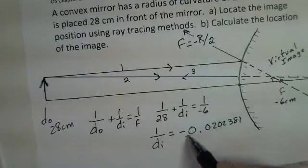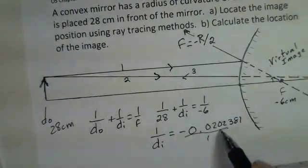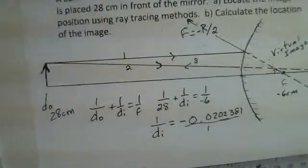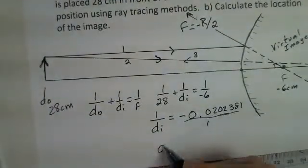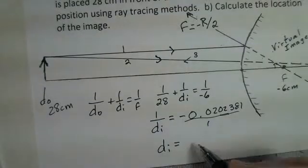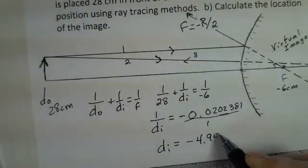To find di, this can be divided by one. We have to invert both sides. And my calculator produces a value for di of -4.94 centimeters.